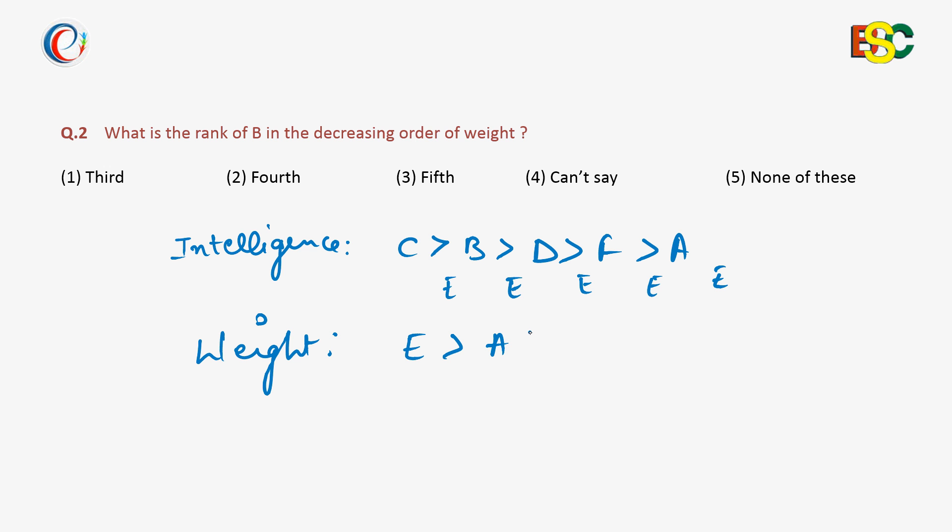We derived this relation among these six people. Question number two says: What is the rank of B in the decreasing order of weight? So you have to find the rank of B in the decreasing order.